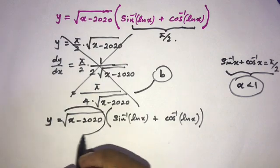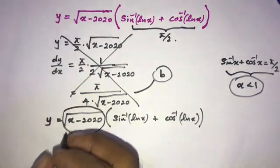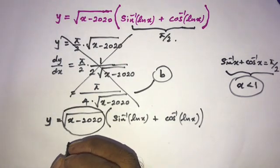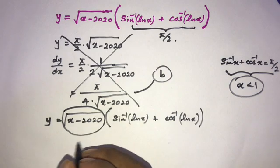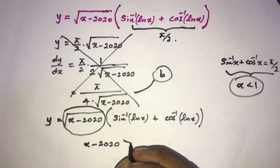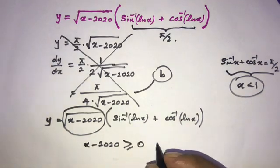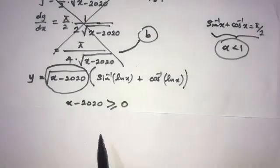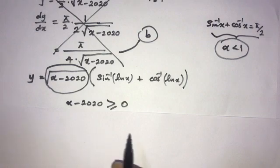Now this is important. Now if we take this term and its domain, so we know x minus 2020 is greater than or equal to zero. Okay, now add 2020 to both sides of this inequality.